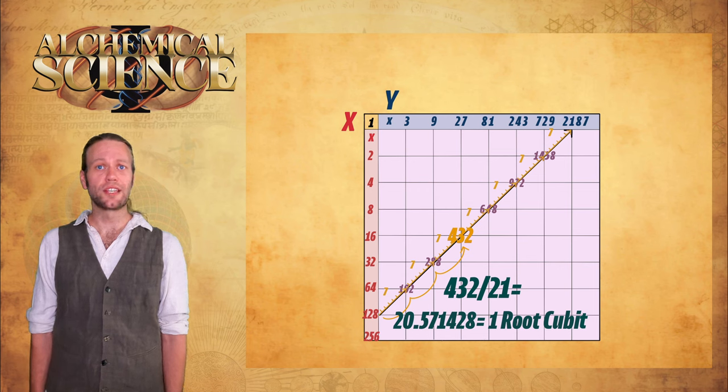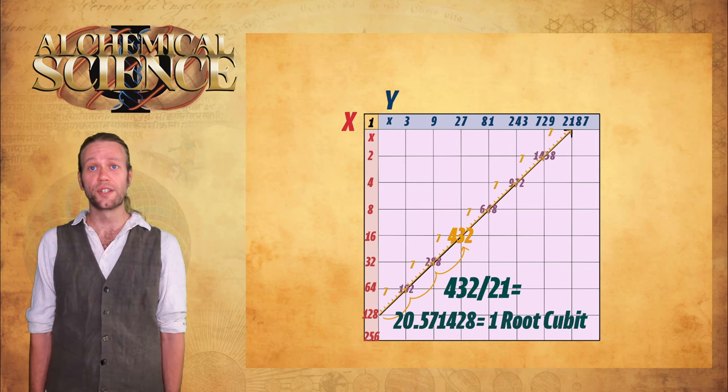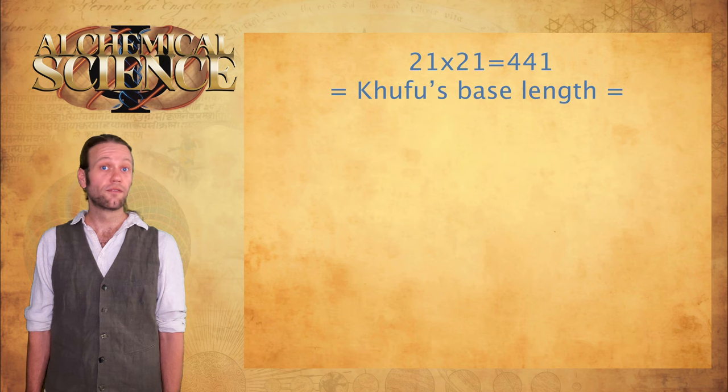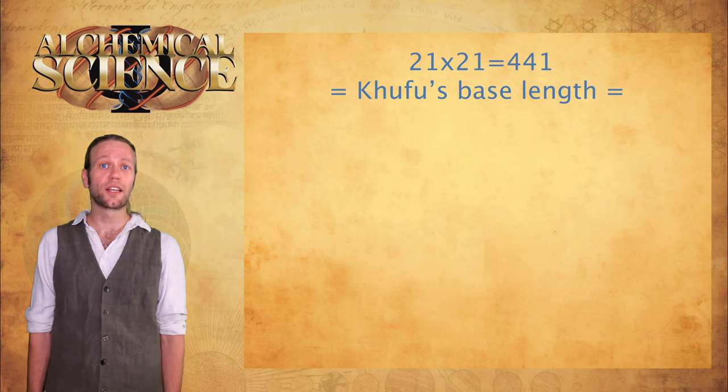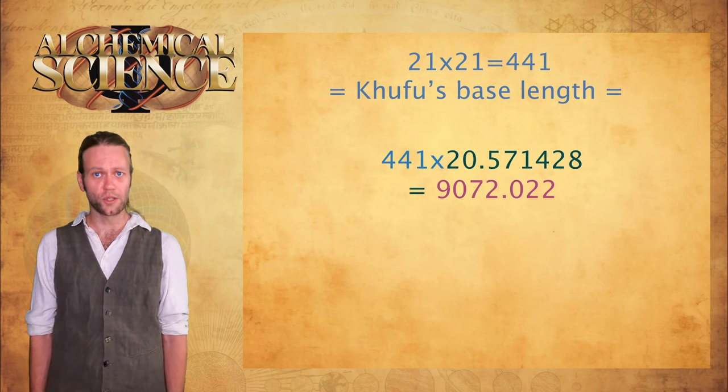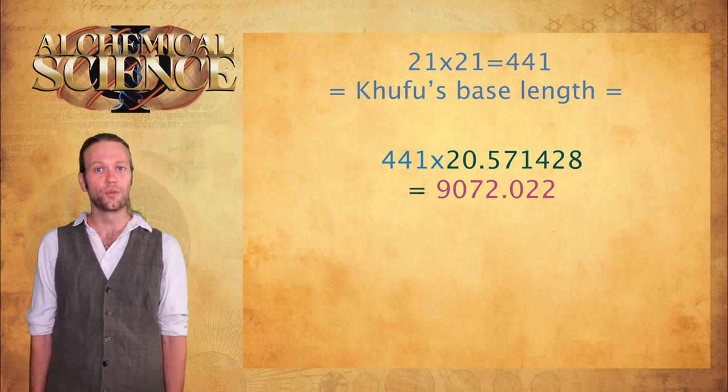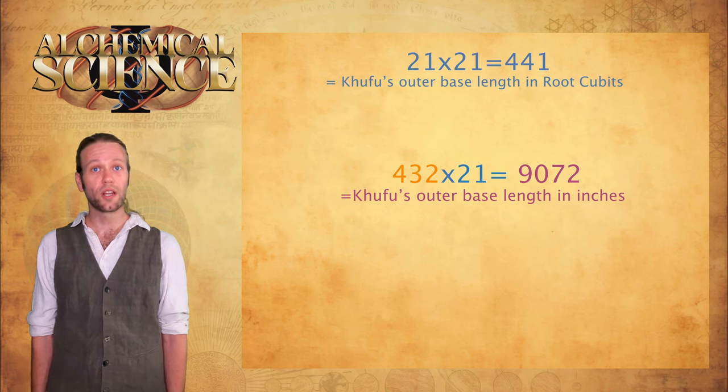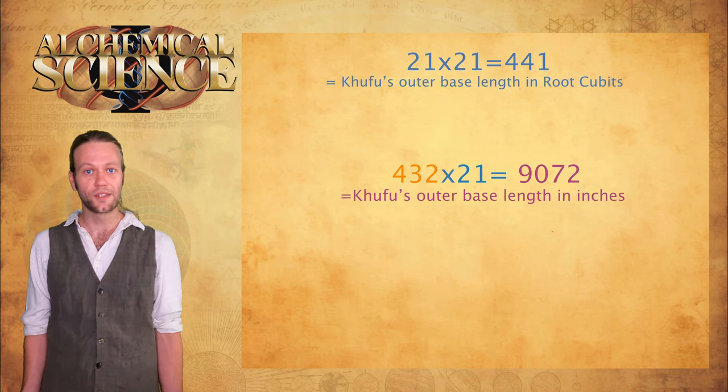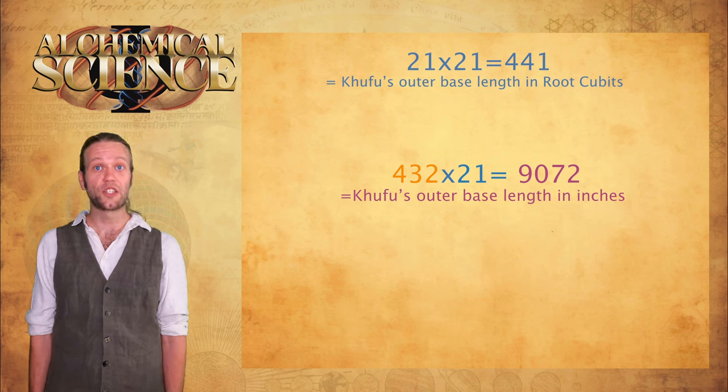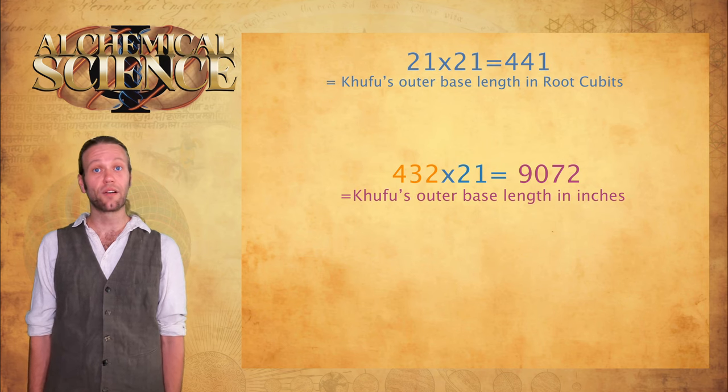Again, it will equal 20.571428, the root cubit in inches. Just as with seven, 21 is a significant number that can allow us to precisely reconstruct several other base measurements of the pyramids in the template. If we first multiply 21 by 21, this equals 441. 441 is the measure of the base length of the pyramid Khufu in root cubits. So 441 times 20.571428 equals 9072.022 inches. If instead of dividing 432 by 21, we multiply 432 by 21, we get 9072.